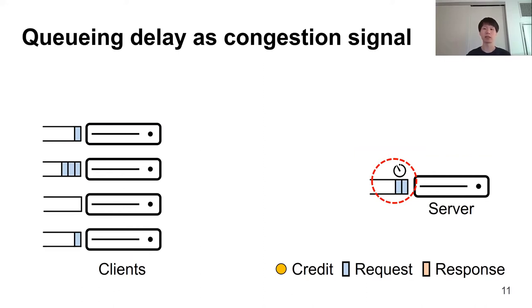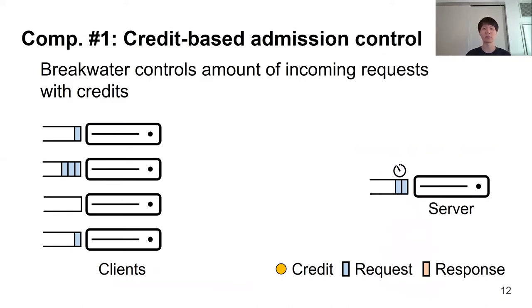In Breakwater, we use Request Queuing Delay as a congestion signal. Request Queuing Delay is measured by the elapsed time between when the request arrives and when the request starts to be processed. If the queuing delay exceeds the target delay, which is derived from the SLO, Breakwater regards the server as overloaded.